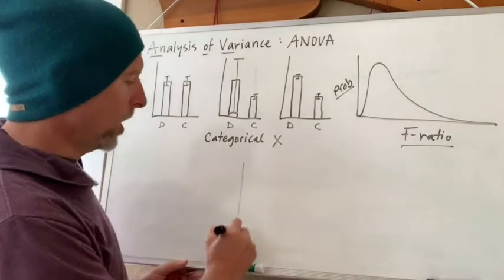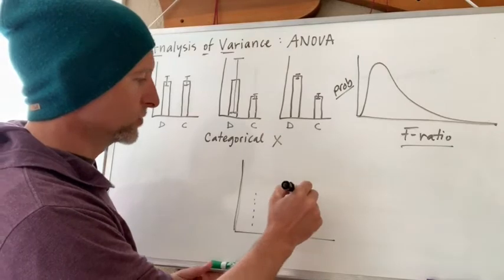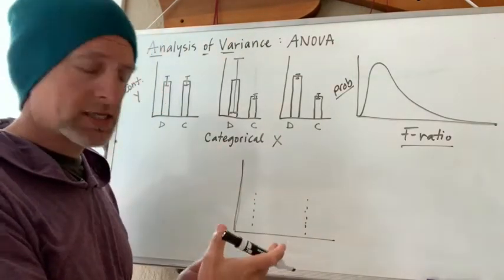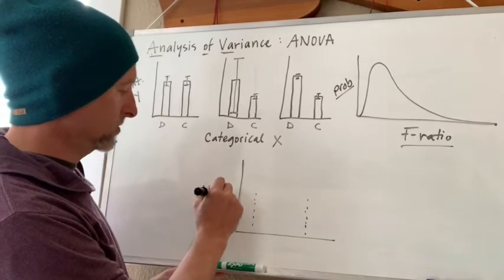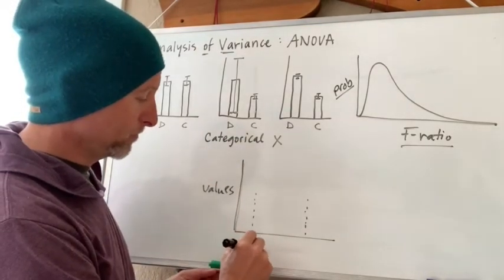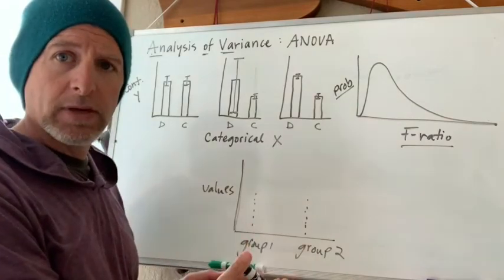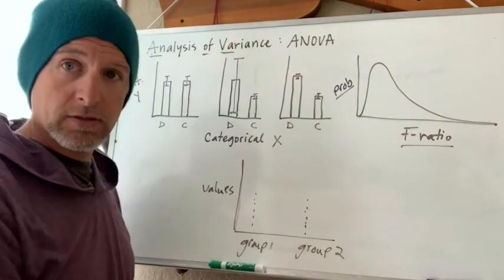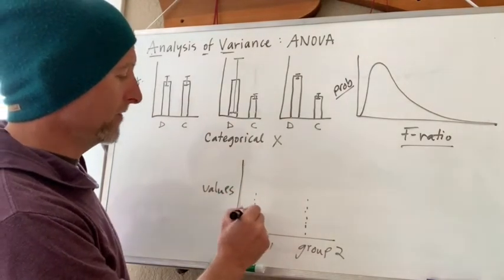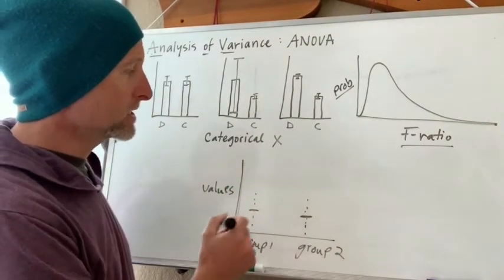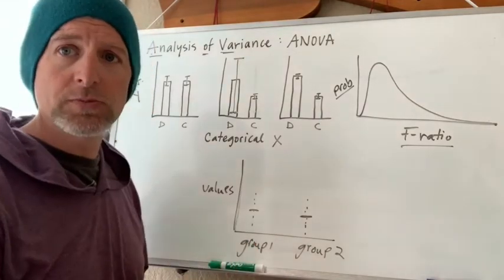If I take one population and I artificially sample it and divide it into two groups, most of the time I'm going to get a situation where these are my individual sample points—group one and group two. Most of the time if there's no true difference I'm going to get similar sets of values. When that happens I'm going to have means that are relatively similar, and my variation between the groups is going to be low, and my variation within the groups is going to be high.